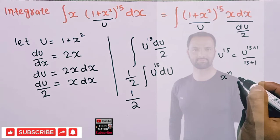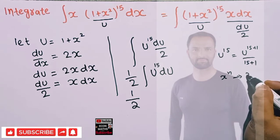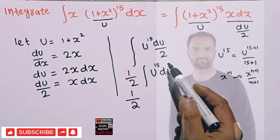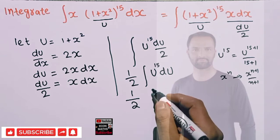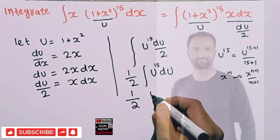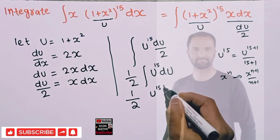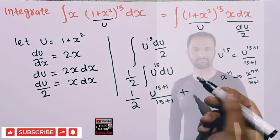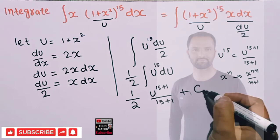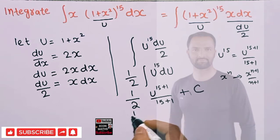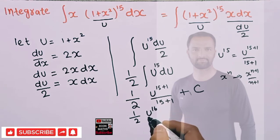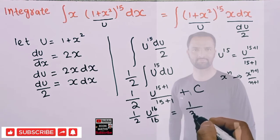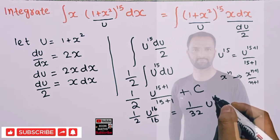Recall the power rule: the integral of x to the power n is x to the power n plus 1 divided by n plus 1 — we add 1 to the exponent and divide by the resulting exponent. So we have one half times u to the power 16 divided by 16, plus the constant of integration. This comes out to 1 upon 32 times u to the power 16.